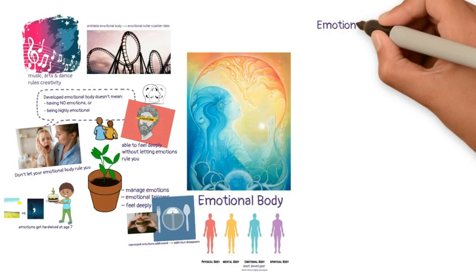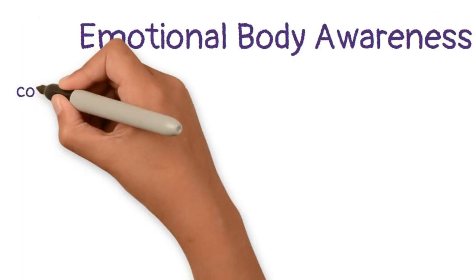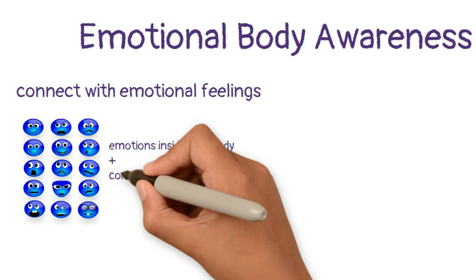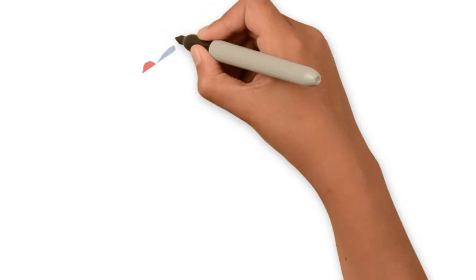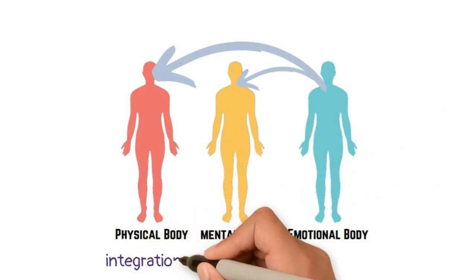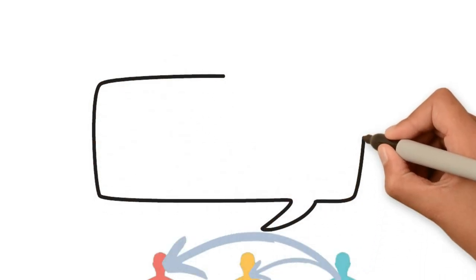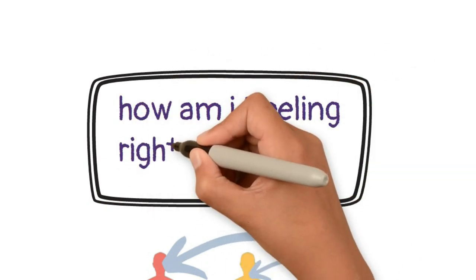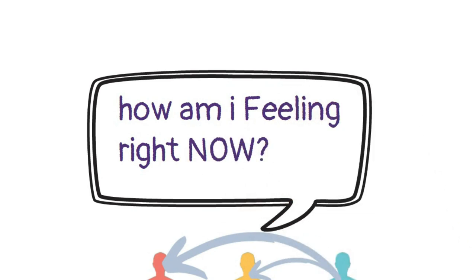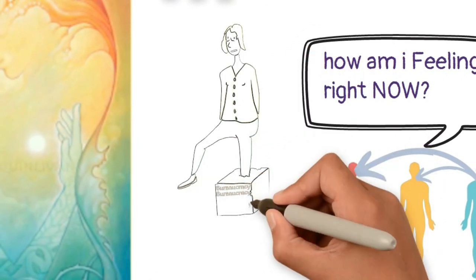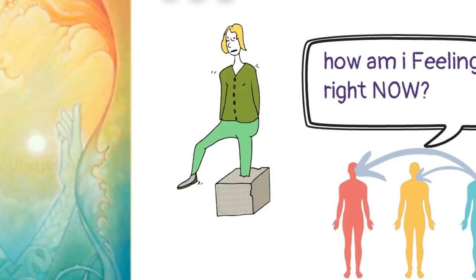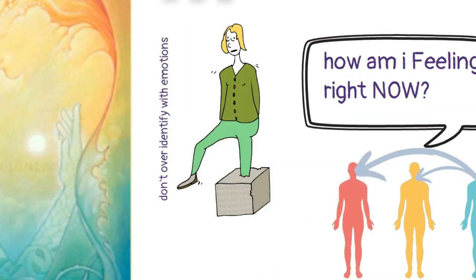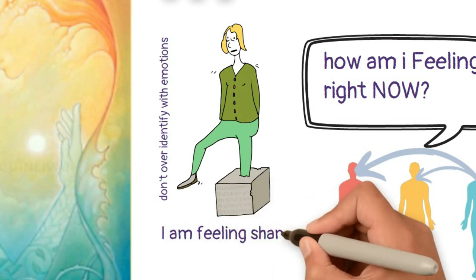Practical steps to develop emotional body awareness: number one is learning to connect with your emotional feelings — to be able to feel your emotions inside your body and connect with them through your thinking process. Next is learning to integrate your emotional self into your physical and mental self, and learning to express what you are feeling in the now moment — being able to say 'I feel angry' or 'now I'm feeling sad.' Being able to name the feeling arising within you is potent. Next is learning to express your emotions without becoming stuck in them and without over-identifying with them — to be able to say 'I am feeling shame' versus 'I am shame.'